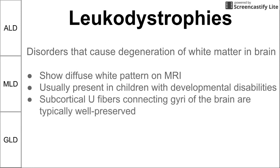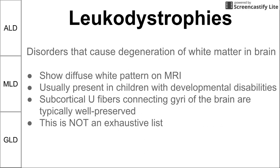It's important to note that the subcortical U-fibers, which are pieces of white matter that connect each gyri in the brain for gyral communication amongst each other, are typically well-preserved. The leukodystrophies do not usually affect the subcortical U-fibers. This is by no means an exhaustive list of leukodystrophies — just three of the common ones, both in the clinic and on exams.